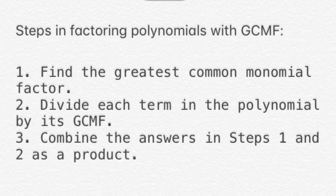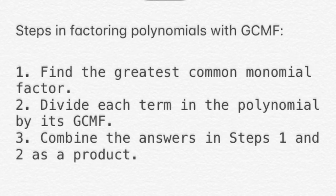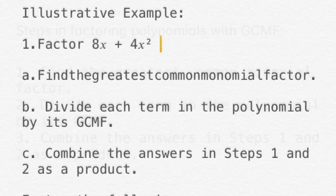Now let's go over the steps in factoring polynomials using GCMF. First, find the Greatest Common Monomial Factor. Second, divide each term in the polynomial by its GCMF. And third, combine the answers in steps 1 and 2 as a product. To illustrate the steps, let's have an example.